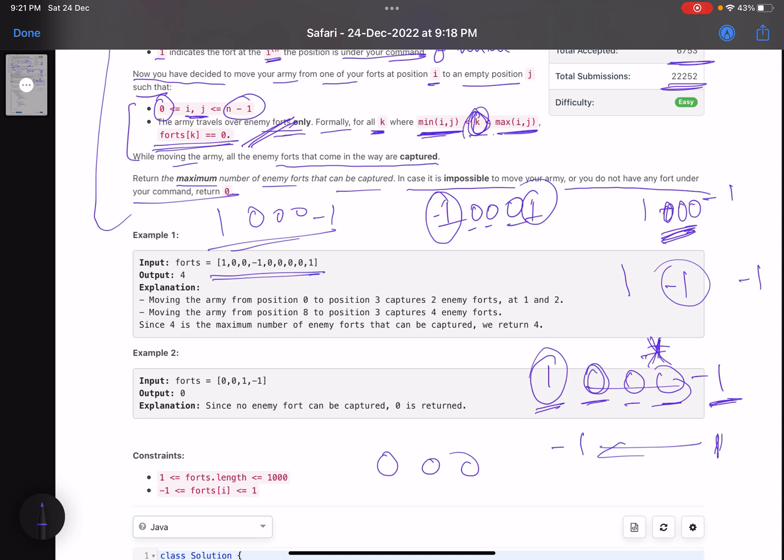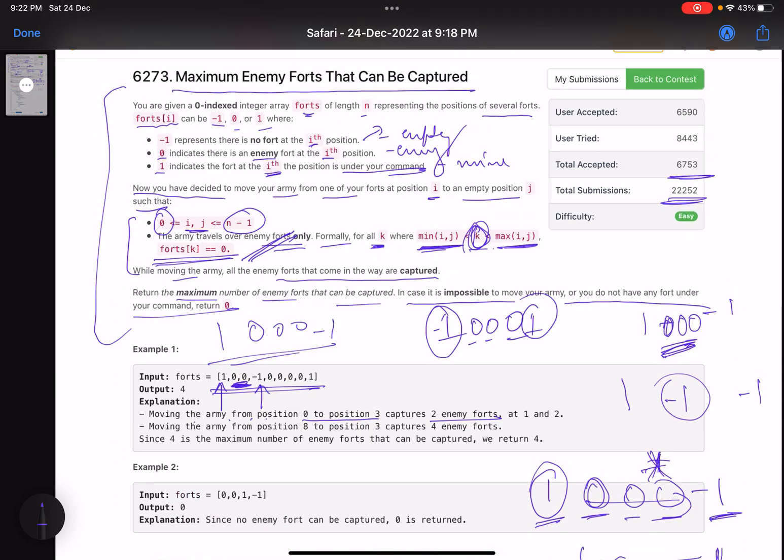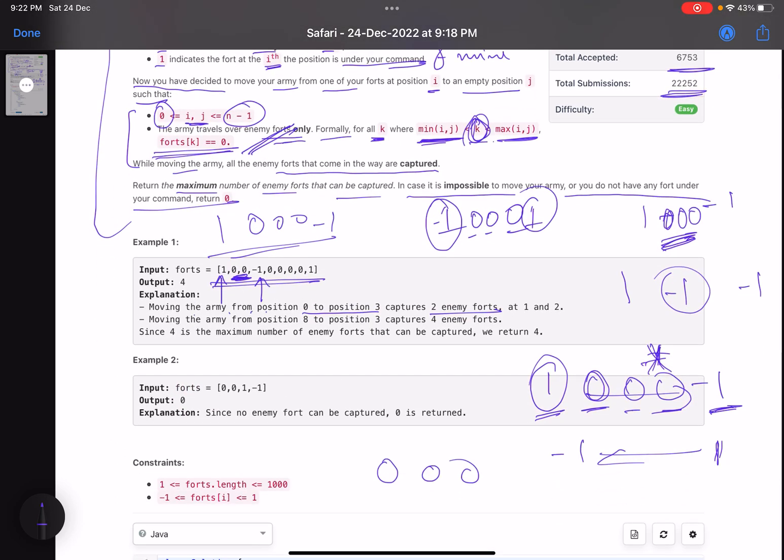This is one of the examples. It says that moving the army from position 0 to 3 captures two enemy forts, because moving from 0 to 3, in the middle all the forts are 0, that means enemy forts. So here you capture two forts.